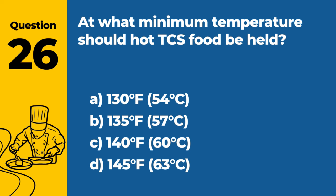Question 42: What is the proper procedure for using gloves in food preparation? A. Reuse gloves to handle different types of food. B. Wash and sanitize gloves between tasks. C. Change gloves between tasks and when they become soiled or torn. D. Gloves are not necessary if hands are washed. Answer: C. Change gloves between tasks and when they become soiled or torn. The proper procedure for using gloves in food preparation is to change them between different tasks and when they become soiled or torn to prevent cross-contamination.